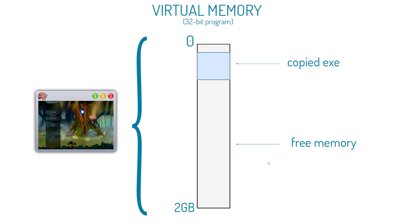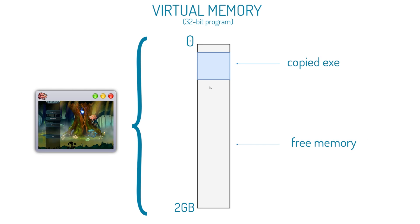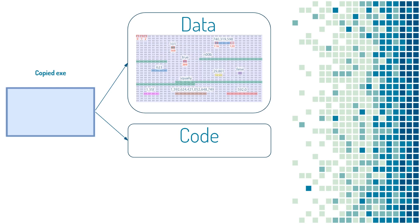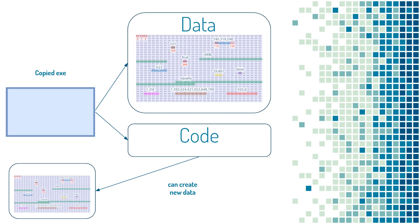When our game first runs, we have our copied EXE, and we have a large amount of free memory that we can potentially use. Let's learn a little bit more about what's going on in this blue section — the copied EXE. Within our copied EXE, we have various sections. The two important ones are data and code. We've learned a lot about data already, and we'll learn more about code later. The important thing to know is that code can create new data.